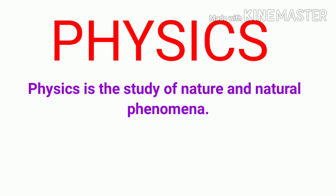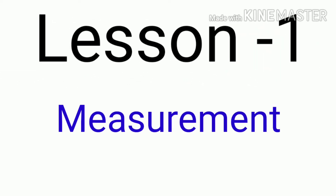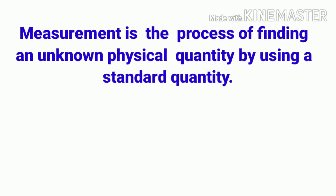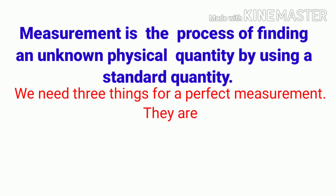Hello everyone, welcome to physics class. Physics is nothing but the study of nature and natural phenomena; it is based on experimental observation. Today we learn lesson one: measurement. Measurement is nothing but the process of finding an unknown physical quantity by using a standard quantity. We need three things for a perfect measurement.